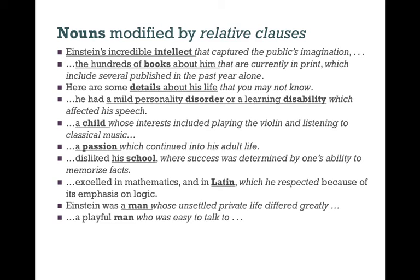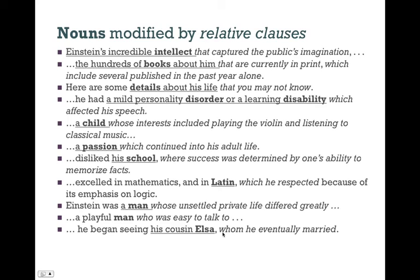Einstein was married twice and his first marriage ended in a bitter divorce. He began seeing his cousin Elsa, whom he eventually married. We have his cousin Elsa, and then the relative clause whom he eventually married. The subject is he, the verb is married — transitive, married someone, married whom — whom is the object relative pronoun, referring back to Elsa.